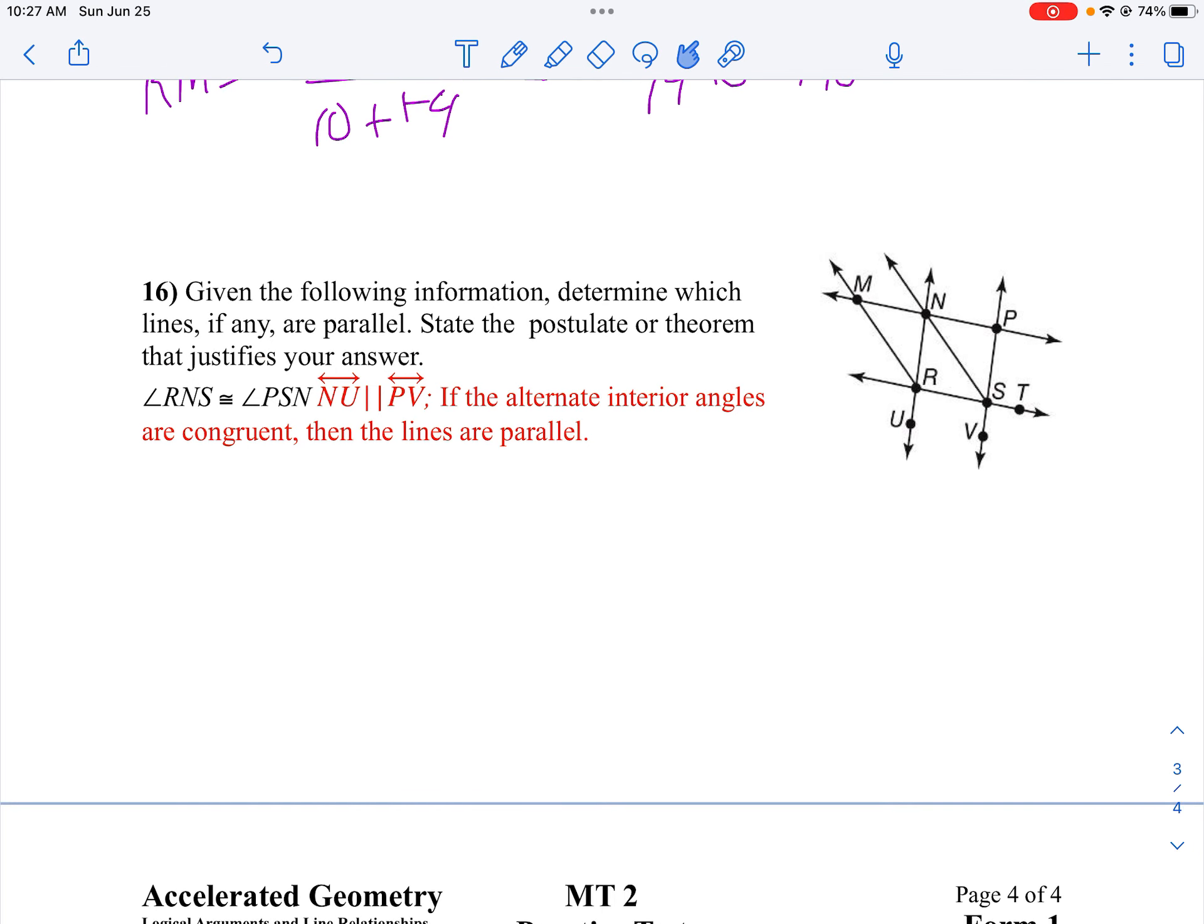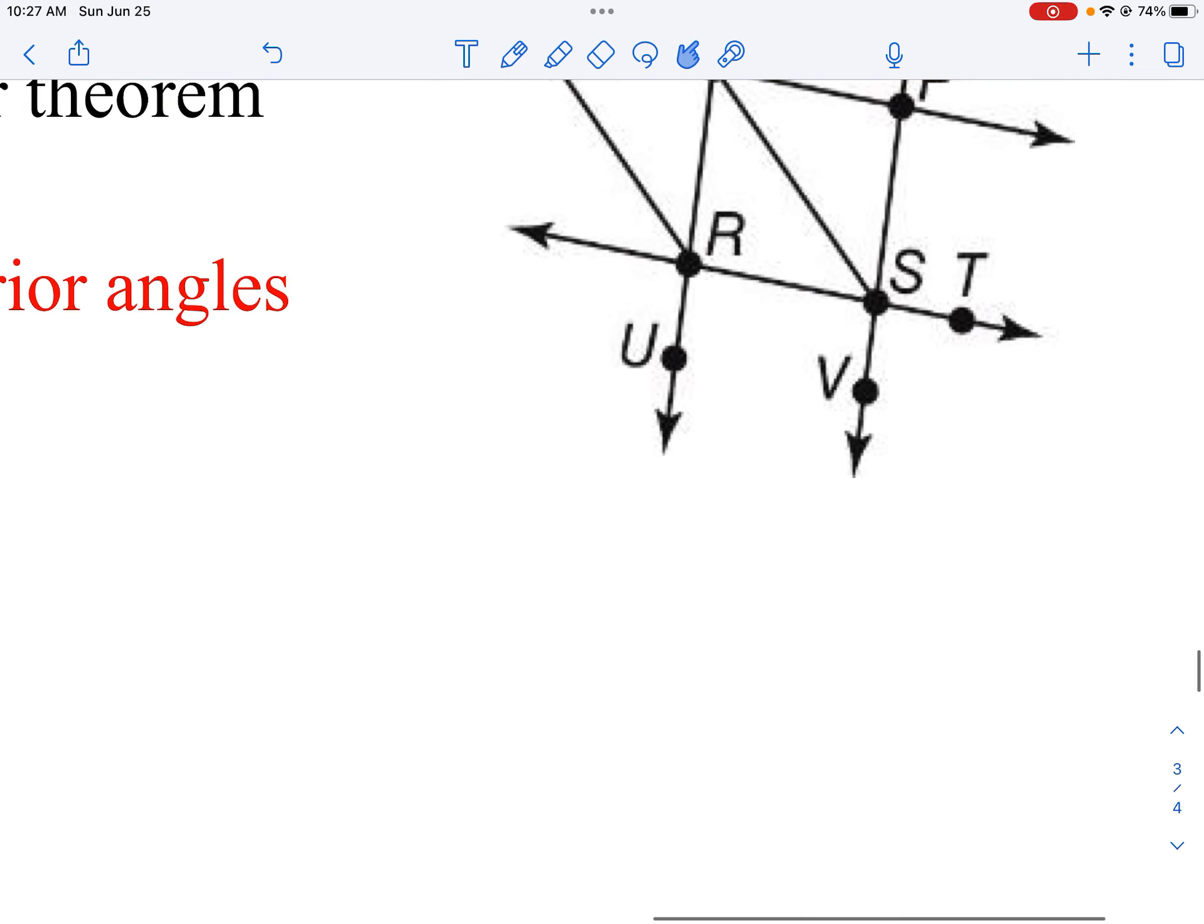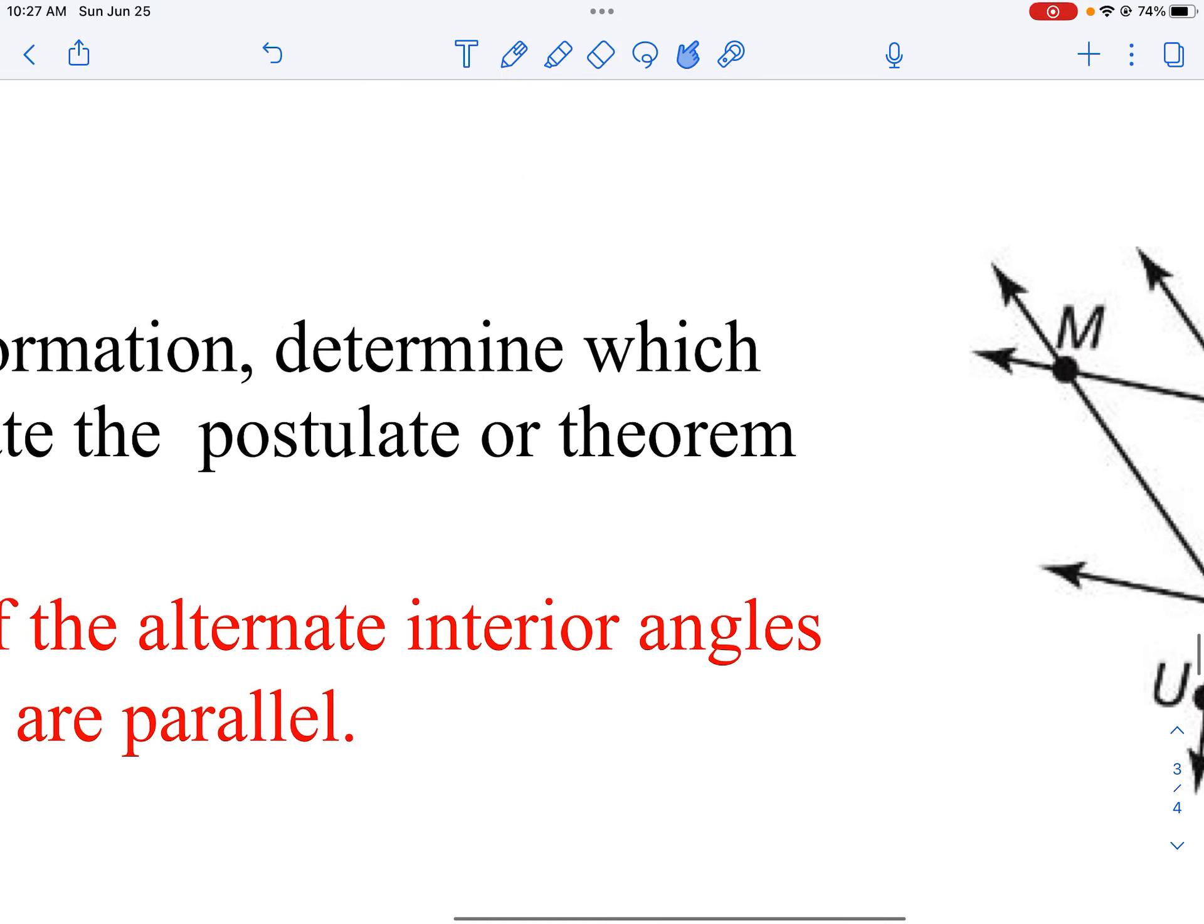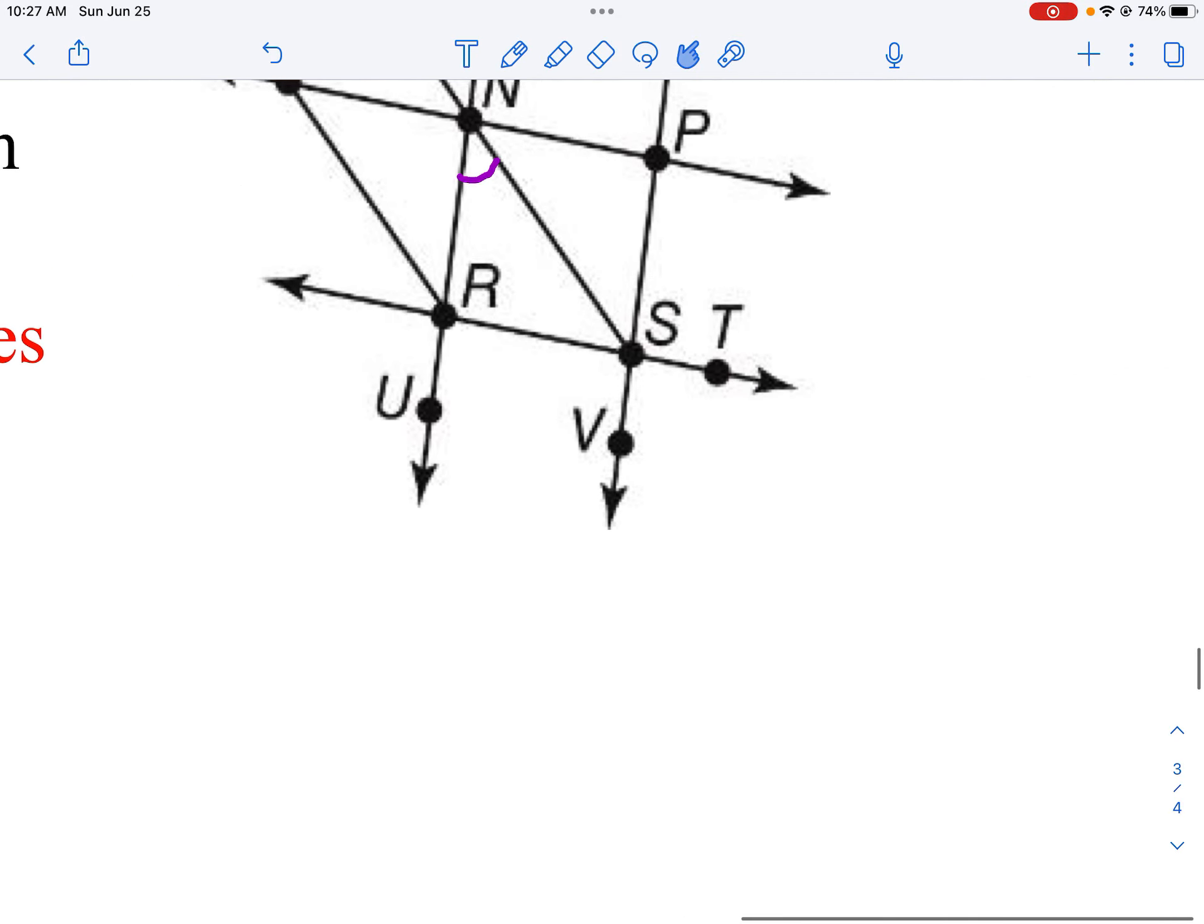Okay. Now, if we take a look on question 16, I want to state the postulate or theorem. First, I want to know what lines are parallel and then tell me why they're parallel. Well, I'm told angle RNS. So let's mark that congruent. I'm going to blow that up here. So I have angle RNS, and that is congruent to angle PSN.